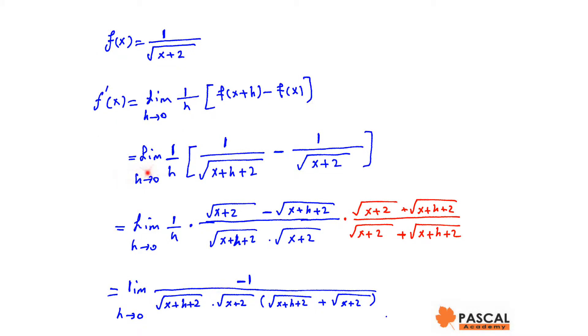Therefore, the derivative would be the limit of 1 over h times 1 over the square root of x plus h plus 2, minus 1 over the square root of x plus 2, as h approaches 0.